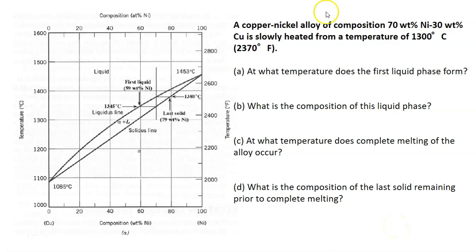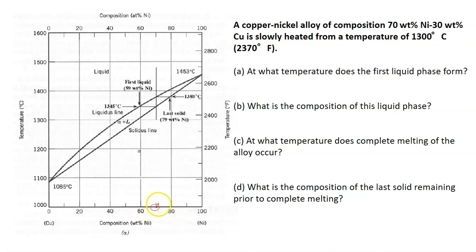Let's look at one example here. We have a phase diagram of the copper-nickel system. The question involves a copper-nickel alloy of composition 70% nickel — so 70% nickel is here and 30% copper — slowly heated from a temperature of 1300°C. So the temperature is around 1300 here, this is the temperature and this is the composition. This is the starting point.